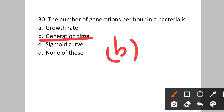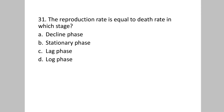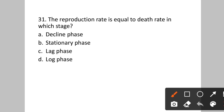Question number thirty-one: The reproduction rate is equal to the death rate in which stage of the bacterial growth curve? Option A: decline phase. B: stationary phase. C: lag phase. D: log phase. In the log phase, the rate of reproduction is equal to the rate of death. Option D is the correct answer.